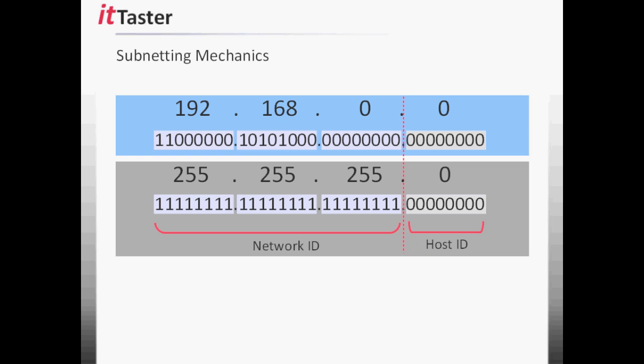Subnetting enables us to divide a network address into subnets by altering the subnet mask. In order to create more networks — subnets — we need to borrow from the host ID portion. This is done by setting host bits to 1 instead of 0 to make them network bits. I'm going to alter the subnet mask accordingly and set two of the host bits to 1 to create new subnets.